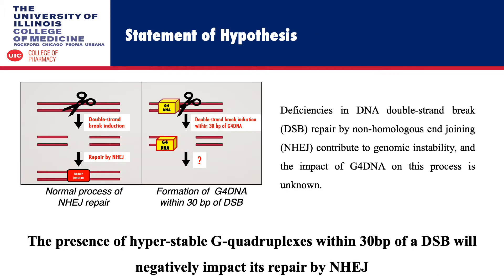Deficiencies in DNA double strand break repair by non-homologous end joining contribute to genomic instability, and the impact of G4 DNA on this process is unknown. We hypothesize that the presence of hyperstable G-quadruplexes within 30 base pairs of a double strand break will negatively impact its repair by NHEJ.